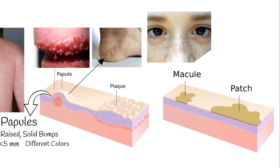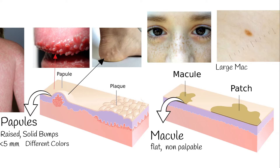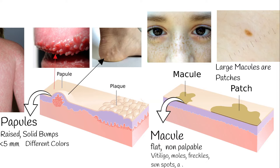Macules are flat, without elevation or depression — so non-palpable — and well- or ill-defined lesions. Big macules are called patches. Examples of macules include vitiligo, moles, freckles, sunspots, and age spots.